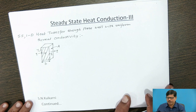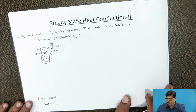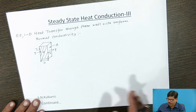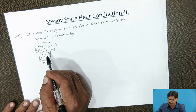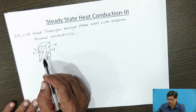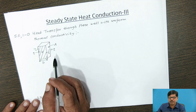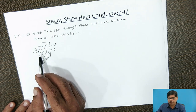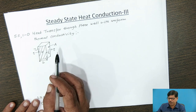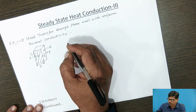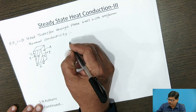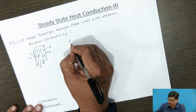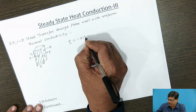First of all, we will deal with the problem of steady-state one-dimensional heat transfer through a plane wall with uniform thermal conductivity without heat generation. We will assume the plane wall having uniform thermal conductivity K, with heat flowing along the X direction. The thickness of the plane wall is B, and temperatures on either face are T1 and T2. The Fourier law for one-dimensional steady-state heat conduction is Q = −KA dT/dx.